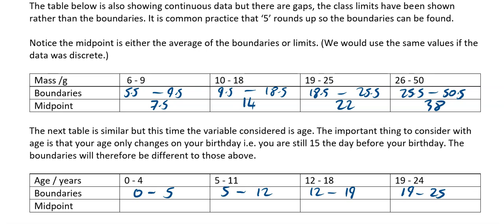For the midpoints, add your boundaries and then divide by 2. 0 plus 5 divided by 2 is 2.5. 5 plus 12 divided by 2 is 17 divided by 2, which is 8.5. 12 plus 19 would be 31, and then divide by 2 is 15.5. 19 plus 25, then divide by 2, would be 22.